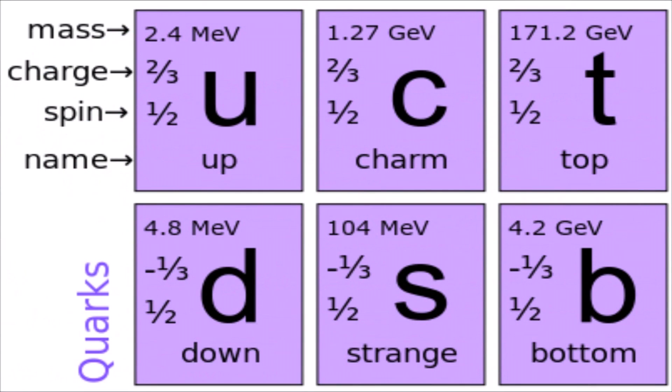There are six different flavors of quarks: up, down, charm, strange, top, and bottom. What differentiates all these quarks from one another are their spin, charges, and mass values. And for now, these are the more important values to know about for quarks.